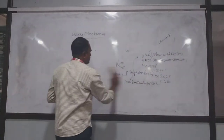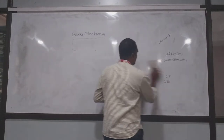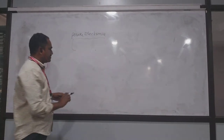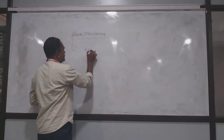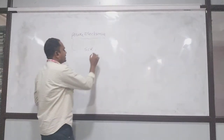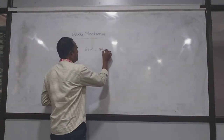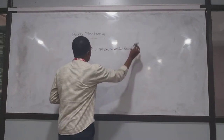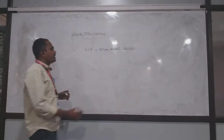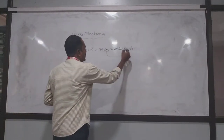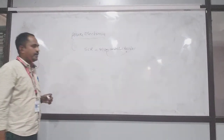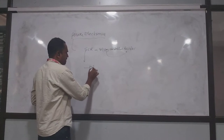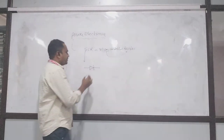Next, coming to the SCR. In power electronics, our main focus is on SCR. SCR stands for Silicon Controlled Rectifier. It is called silicon controlled rectifier because it is made up of silicon material and performs rectification. Its symbol is almost similar to a diode. The only difference is the gate terminal.